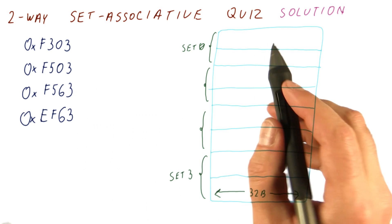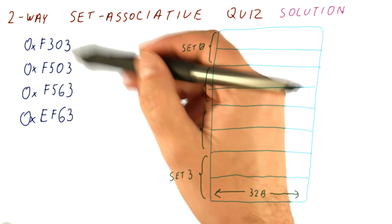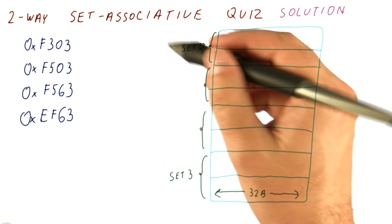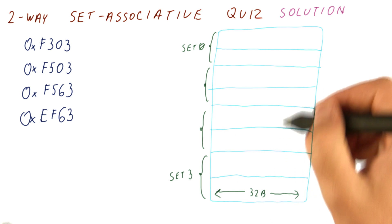Let's look at the solution to our two-way set associative cache quiz. As before, the answer to this type of question requires us to figure out which bits in the address determine what in the cache.